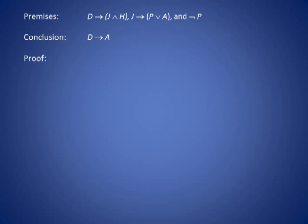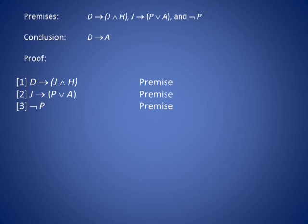The proof begins with listing the three original premises: D implies J and H, J implies P or A, and not P. Now we introduce the conditional premise as D on line 4.